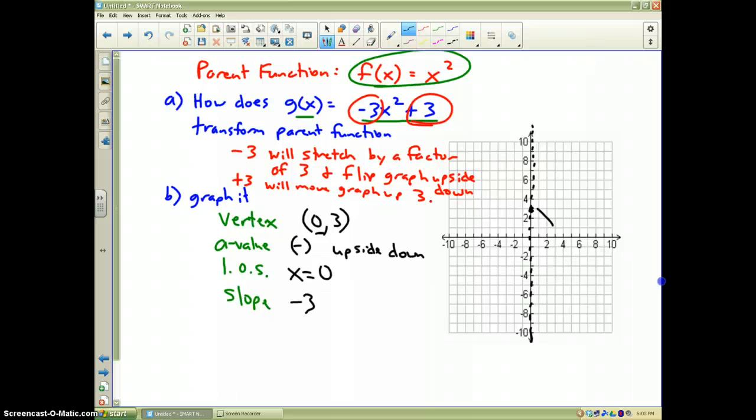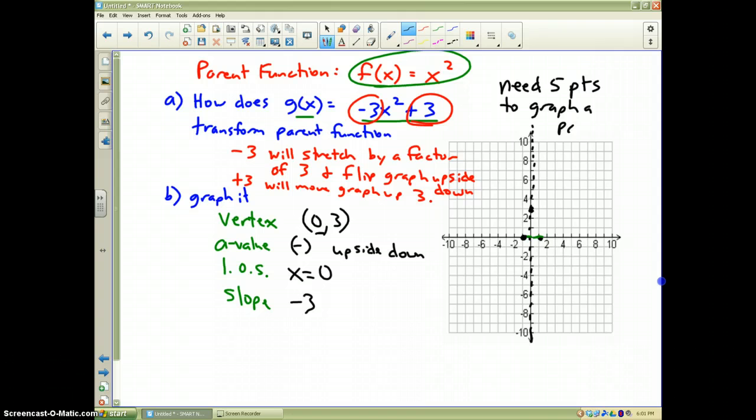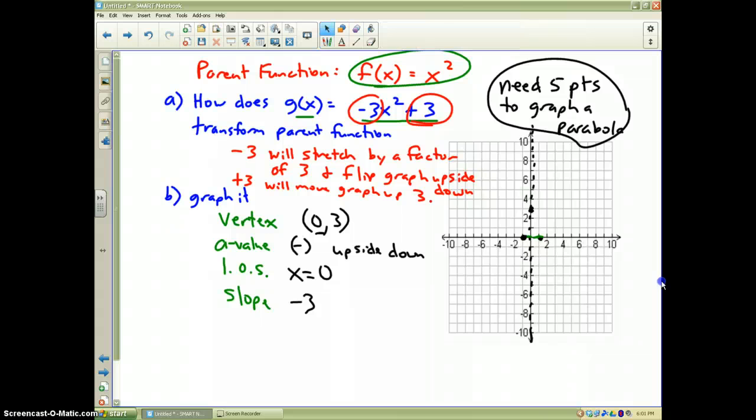That means if I go to the right 1 from my vertex, if I go to the right 1, then I have to go down 3 to get my next point, which is going to be right there. That only works for the first point, and that's it. Now, since this is 1 off the line, then I know 1 off the line over here is another point on my graph. We always need 5 points to graph a parabola.